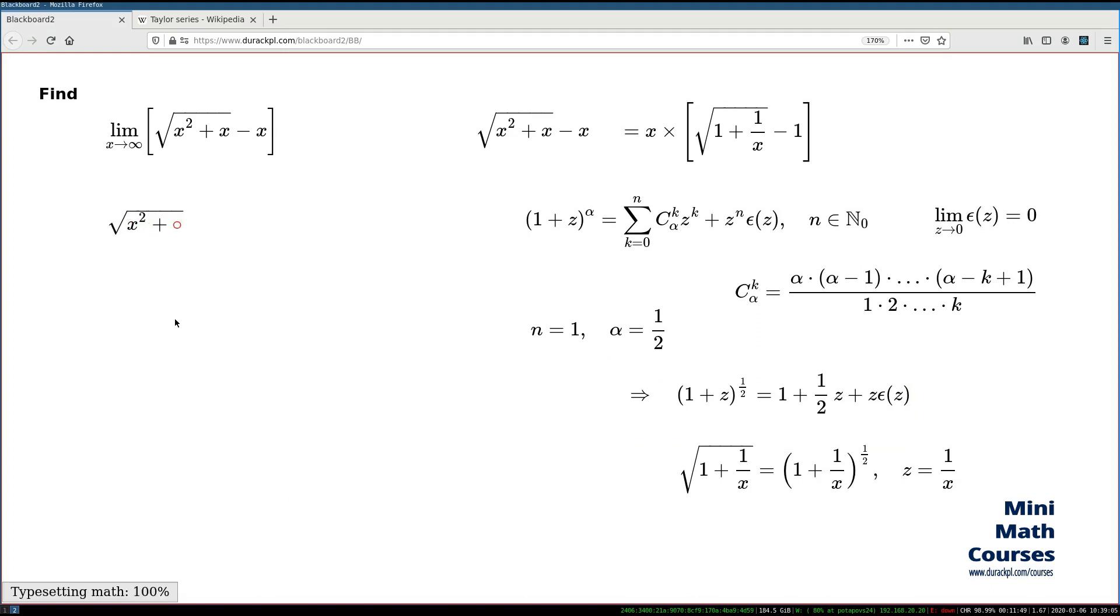I'll take my original function which is factored and I replace this square root with the expansion on the right hand side. In place of z I use 1/x. x times [1 + 1/(2x)] - these two terms with z = 1/x, and (1/x)ε(1/x) is this term. Again z is 1/x. This is my substitution of Taylor expansion in place of this square root.